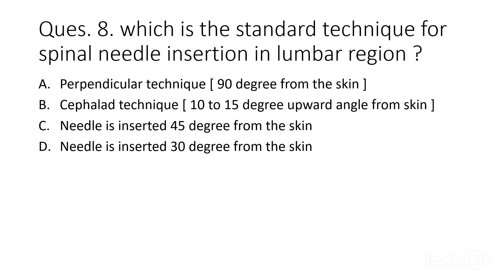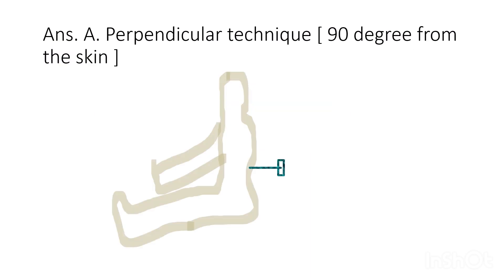Eighth question: what is the standard technique for spinal needle insertion in the lumbar region? Options are perpendicular technique (90 degrees from skin), similar technique (10–15 degree upward angle), 45 degrees from skin, or 30 degrees from skin. The answer is the perpendicular technique — 90 degrees from the skin — which is the most widely used standard technique for spinal anesthesia.